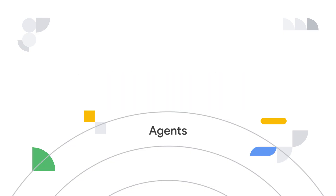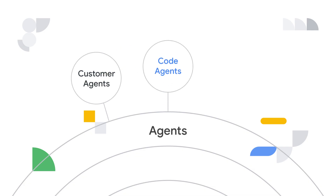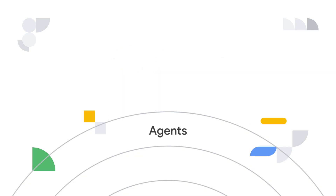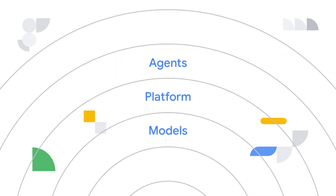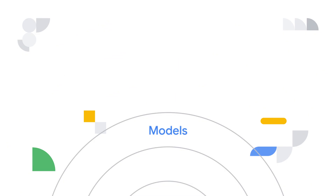You can have a variety of agents, such as customer agents, code agents, data agents, and many more. The platform layer typically sits between agents and models, providing the infrastructure for them to interact. For now, let's jump ahead and focus on the models themselves, and we'll come back to platforms shortly.